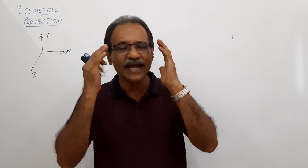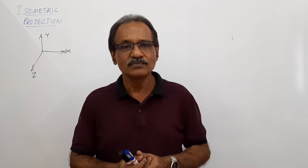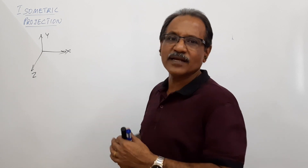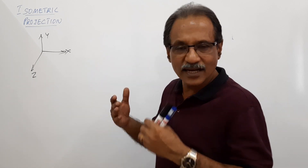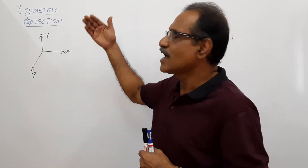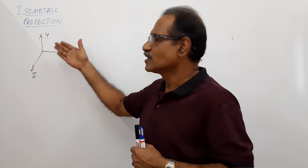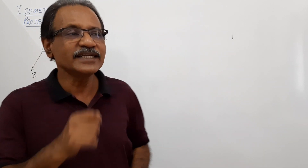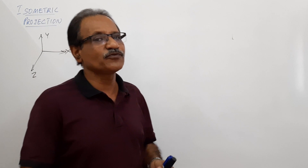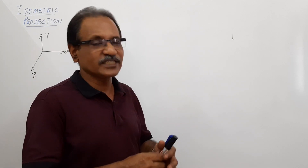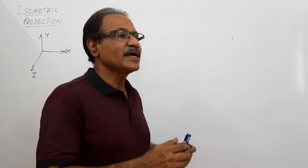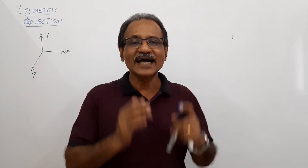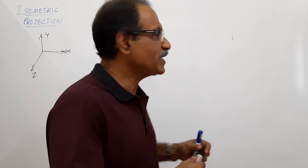In orthographic projection, light rays are parallel to each other and perpendicular to the plane, and we need to draw more than one view to define an object. This disadvantage of orthographic projection is overcome by a pictorial drawing called isometric projection.